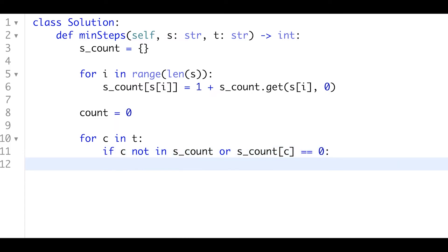If the current character is not in the hash table, or if the current character is zero, then count plus one. If not the case, which means the hash table has a current character and it's not zero, then s count current character minus one.